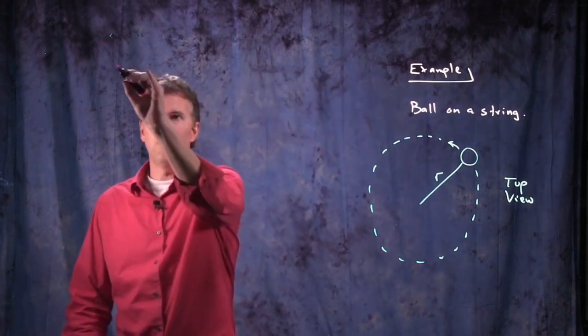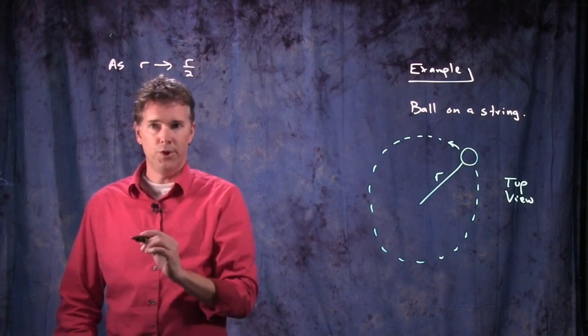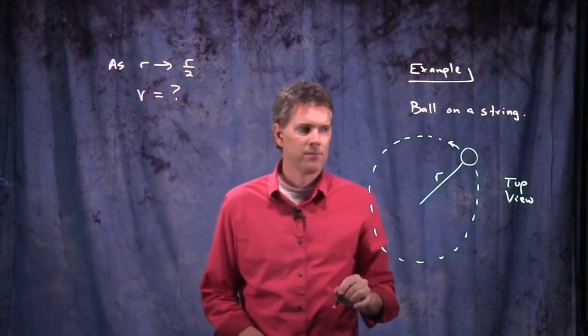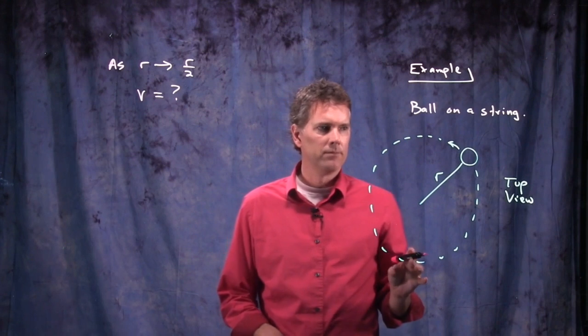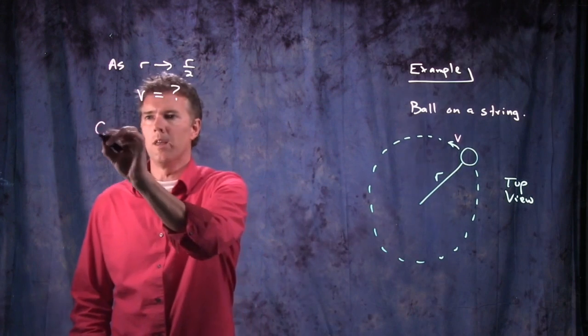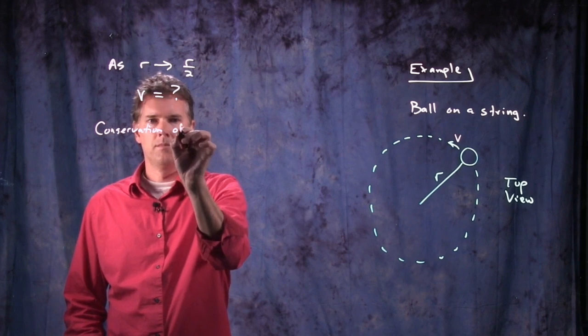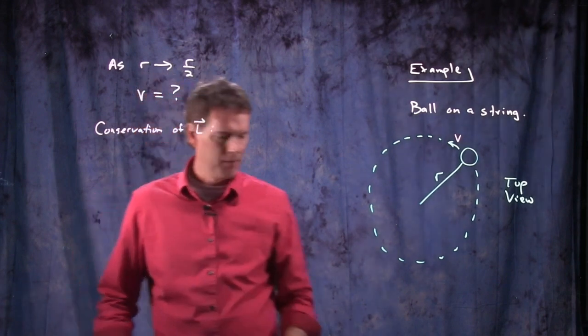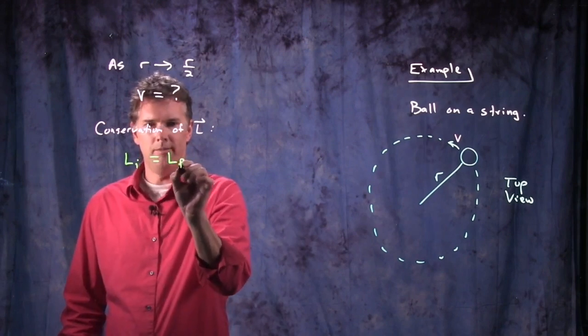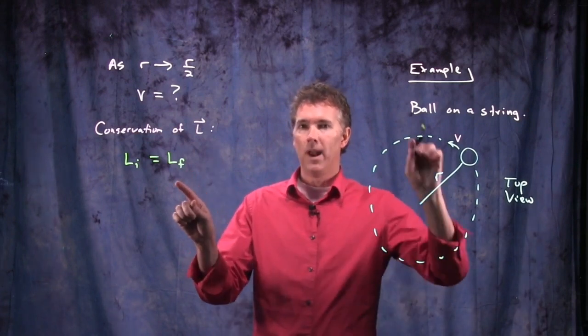So we'll take this example and we're going to say as R goes to R over 2, what happens to V? Alright, let's see if we can figure this out. Ball's spinning around at some particular V initially, we know that conservation of angular momentum says the following: Li equals LF. But we also know what the angular momentum is for a ball on a string.